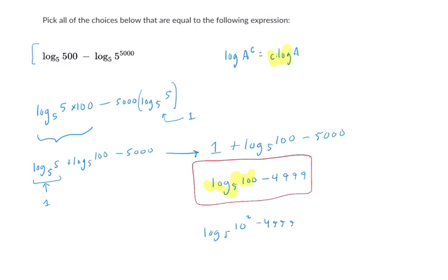And, well, what else could we do? We could, again, use the clog law to bring that 2 down in the front, and we get this. Log twice the log base 5 of 10 minus 4,999.